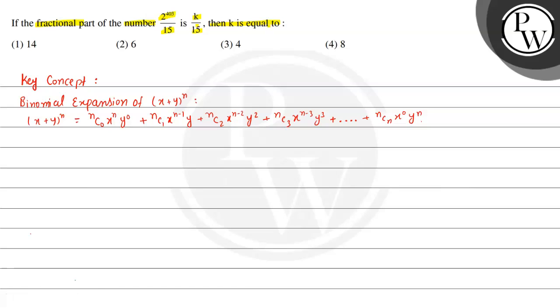We have been given 2^403 divided by 15. So 2^403 can be written as 2^400 multiplied by 2^3. We can write 2^3 as 8, and then 2^400 as (2^4)^100. Now 2^4 is 16, so 16 can be written as (15 + 1) to the power 100.